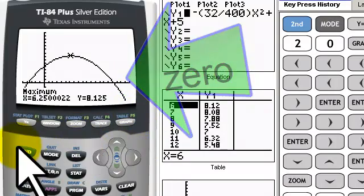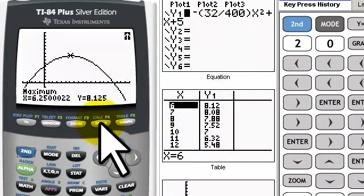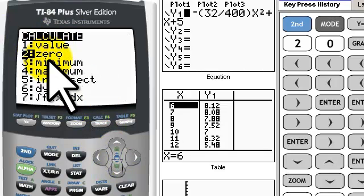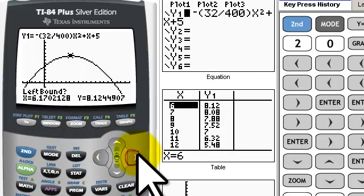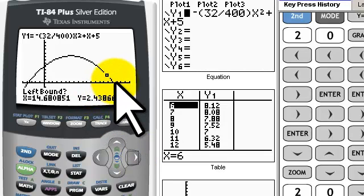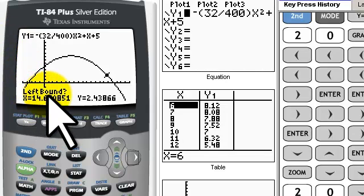So I'm going to hit the calculate button again. Second trace is my calculate button. This time I want to calculate the zero. So I go down to 2. I'm going to hit enter. And it will say, well, get to your left bound. So I'm hitting my cursor key, and I'm going to get to a little bit left of my zero. So is that my left bound? Hit enter.